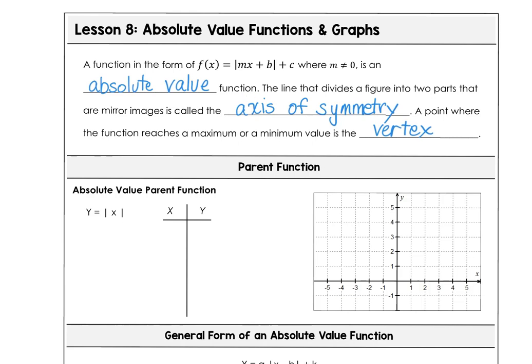The line that divides the figure into two parts that are mirror images of each other is called the axis of symmetry. A point where the function reaches a maximum or minimum value is known as the vertex.